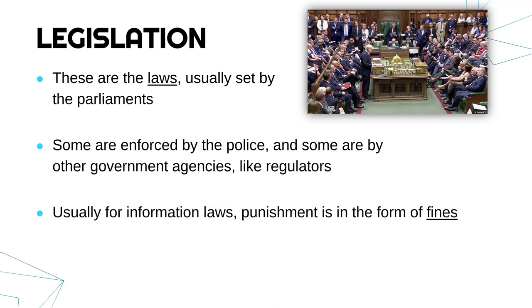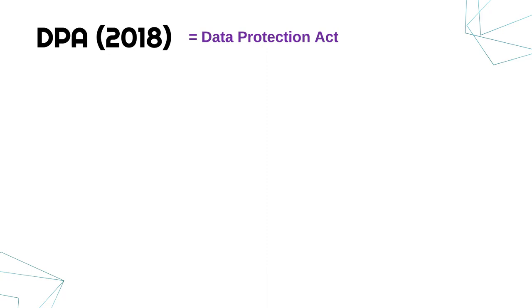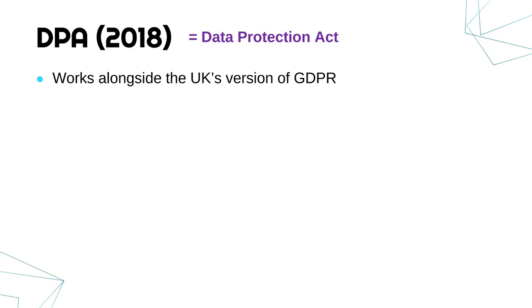It's not always the police that issue these fines — it can be other agencies. One of the laws which can produce huge fines is the Data Protection Act, often shortened to DPA. The most recent version came out in 2018; there was a version from 1998, but it's now been updated. This law works alongside the UK's version of GDPR, which originated from the European Union. The UK effectively adopted this EU law, and despite leaving the EU, we still have it, alongside this other UK-only law called the Data Protection Act.